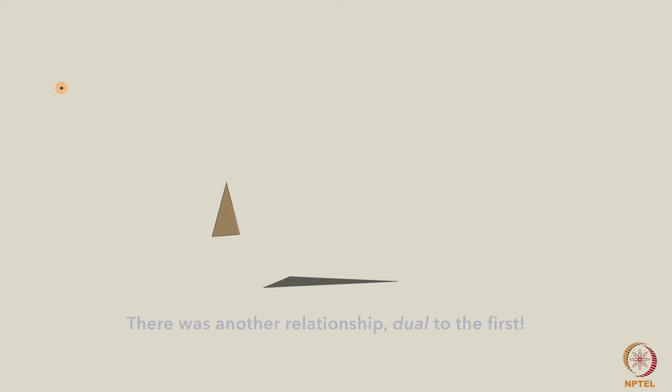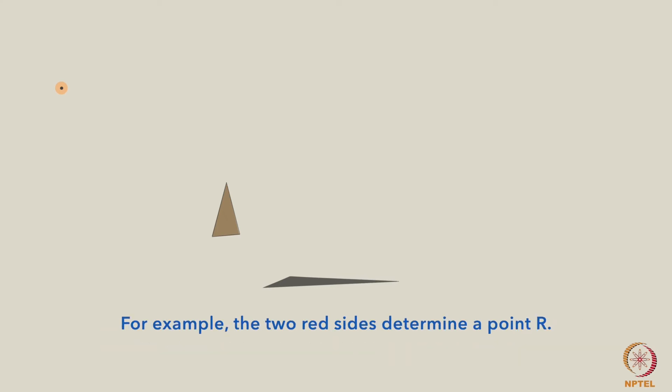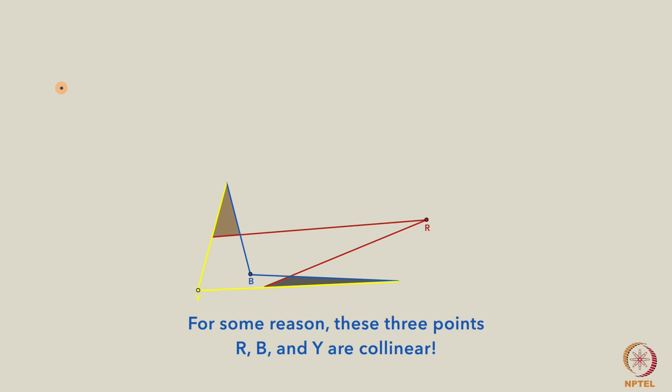But, there was another relationship, dual to the first. Rather than look at the lines determined by corresponding points, I looked at the points determined by corresponding lines. For example, the two red sides determine a point R, the two blue sides determine a point B, and the two yellow sides determine a point Y. And for some reason, these three points, R, B and Y are collinear. You could say the triangles were in perspective from a line.